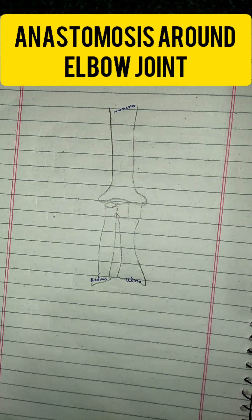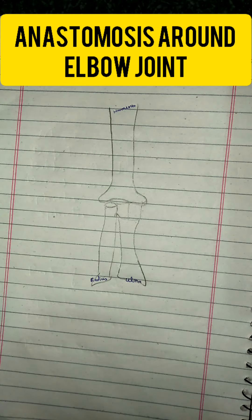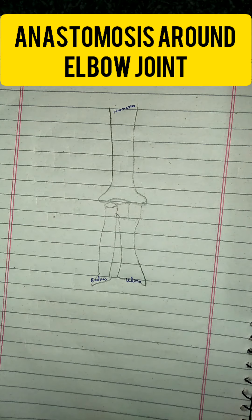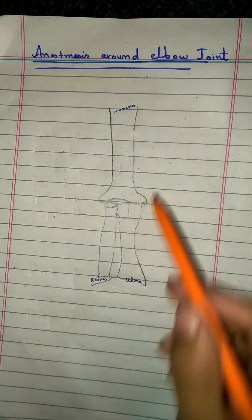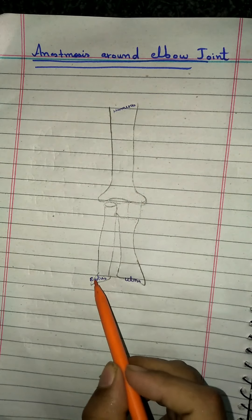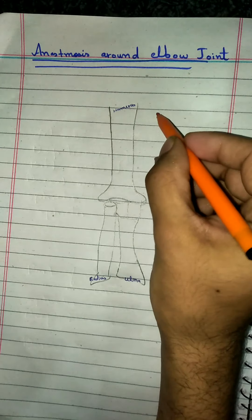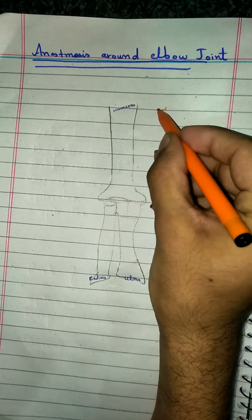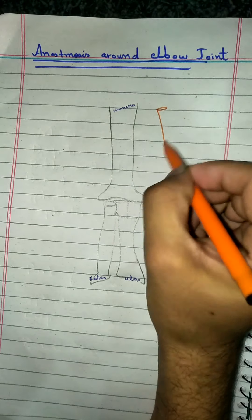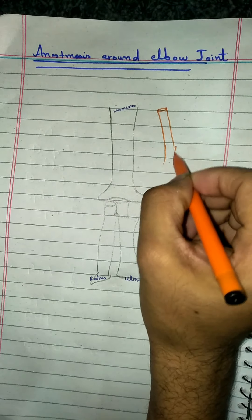Hello guys, so now our topic is the anastomosis around the elbow joint — an important question from the first year exams. Here is the humerus, radius, and ulna. Here is the brachial artery.